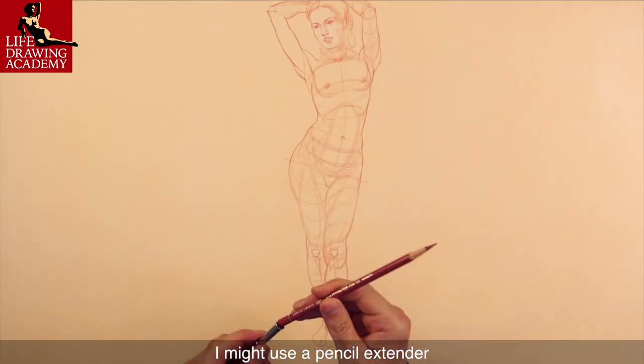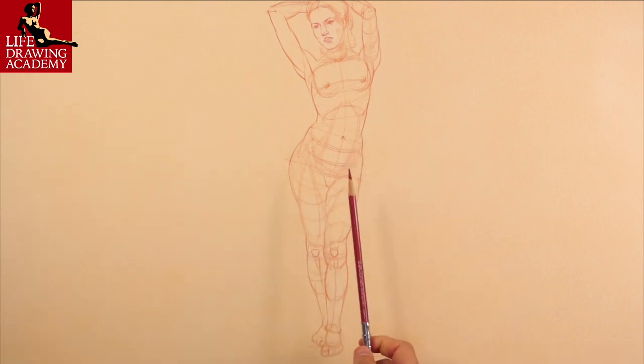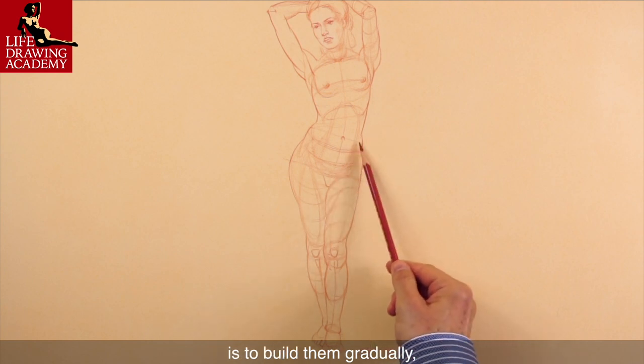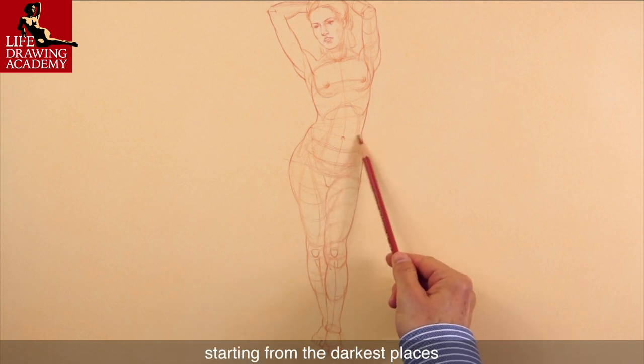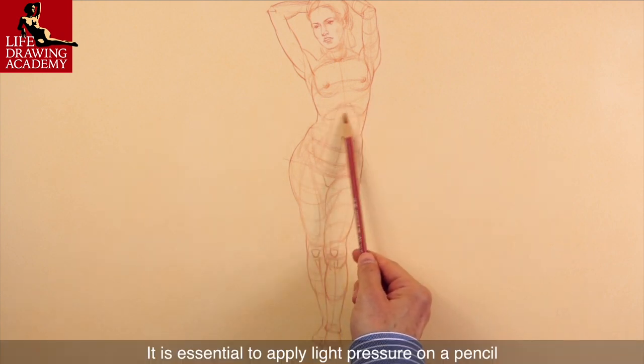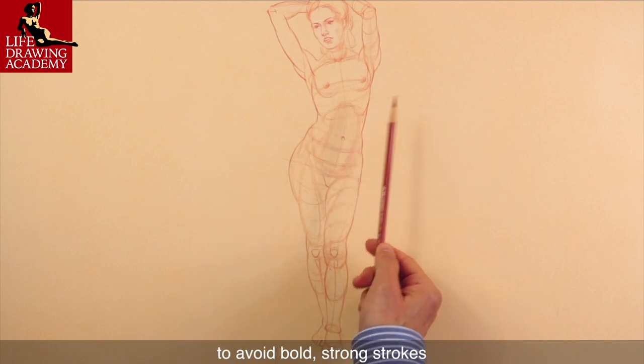I might use a pencil extender and hold a pencil with the candle grip to speed up hatching. The right approach to render tonal values is to build them gradually, starting from the darkest places and working in layers of hatching. It is essential to apply light pressure on a pencil to avoid bold, strong strokes.